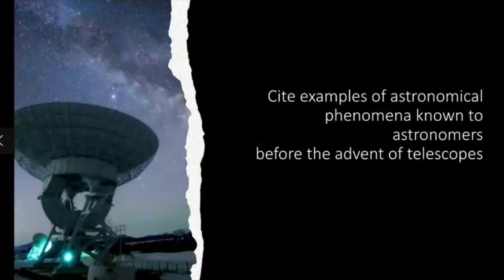This was very close to the actual value obtained by scientists today using technology. The circumference of Earth is 40,075 kilometers, while the value Eratosthenes arrived at is 40,000 kilometers. That's how the Greeks knew that the Earth is actually round or spherical in shape. Now let's proceed to our second objective: to cite examples of astronomical phenomena known to astronomers before the advent of telescopes.